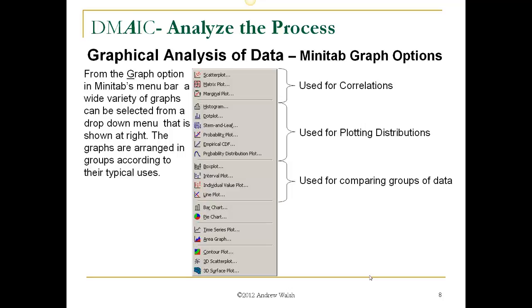The next one is used for comparing groups of data with box plots, interval plots, individual value plots, and line plots. And then we use the next portion for analyzing categories of data, so bar charts and pie charts. And then looking for trends over time, time series plots, area graphs, and then finally the 3D, using three variables, so contour plots, 3D scatter plots, and 3D surface plots.